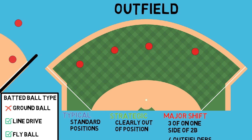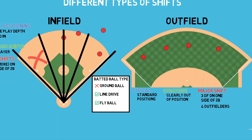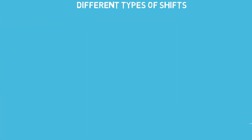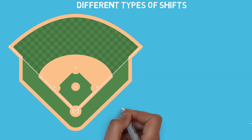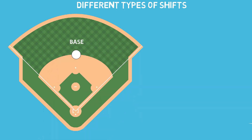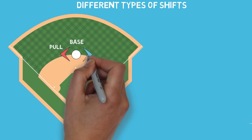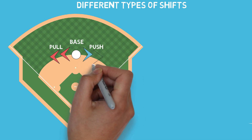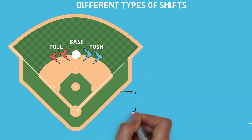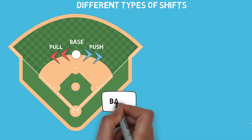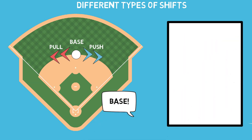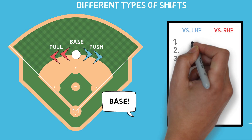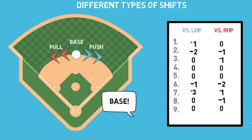You see this a lot against guys like Joey Gallo. So how can you apply this with your team? It really depends on what data you have available to you. This can be as simple as a base, pull, and push system, where athletes take steps in whichever direction based on research done before the game. There are software options available to help make some of these decisions, especially at the college level. A coach can yell this information from the dugout, or athletes can carry cards in their pockets that tell them to take steps in certain directions before each hitter.